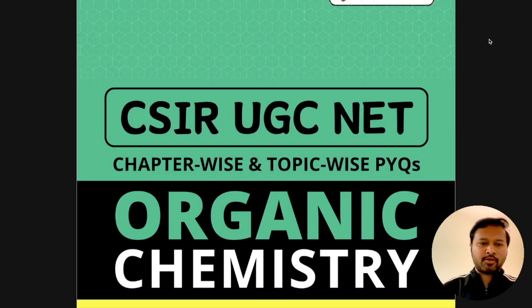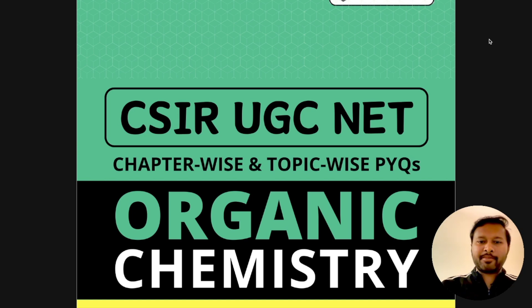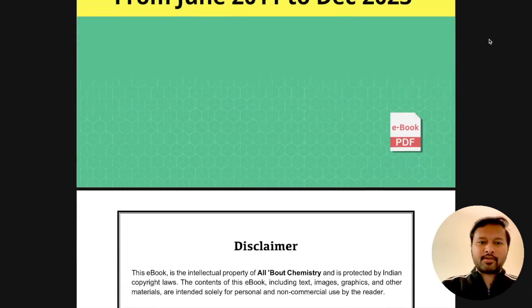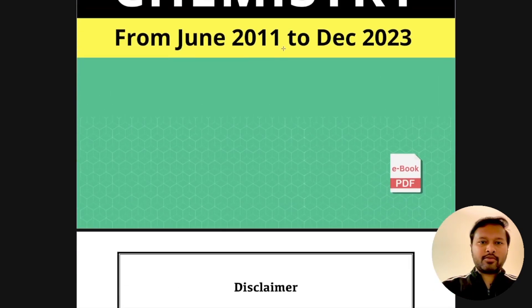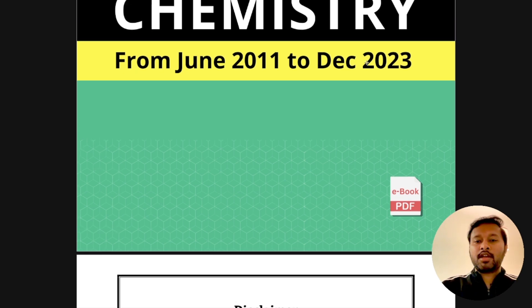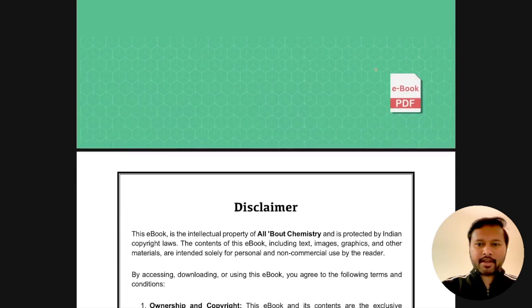You'll be getting separate books for organic, inorganic, and physical chemistry. Let me quickly show you how the ebook looks and the interface. This is the organic chemistry ebook, covering June 2011 to December 2023.